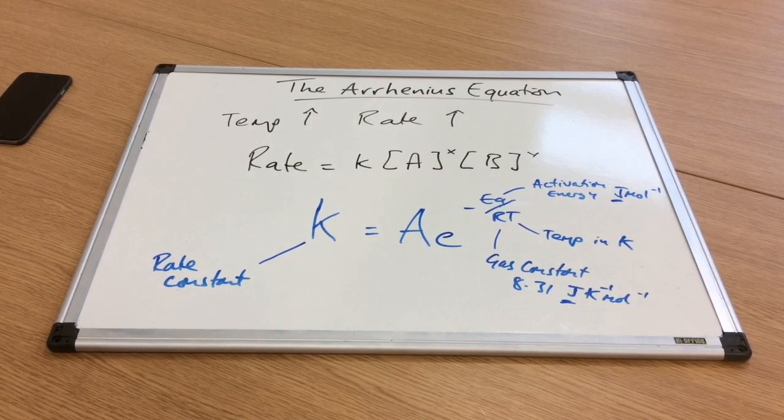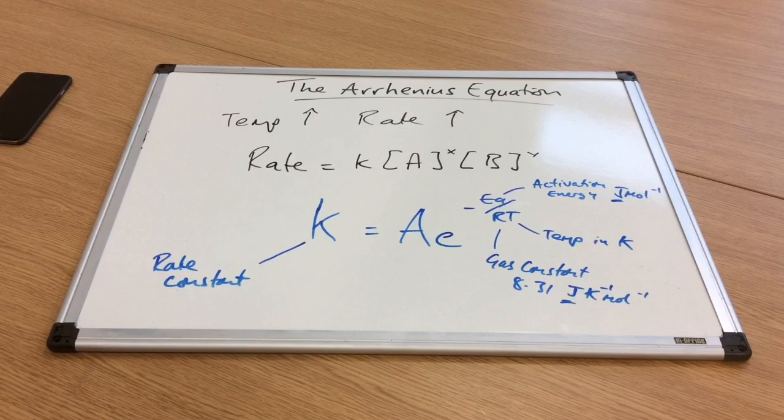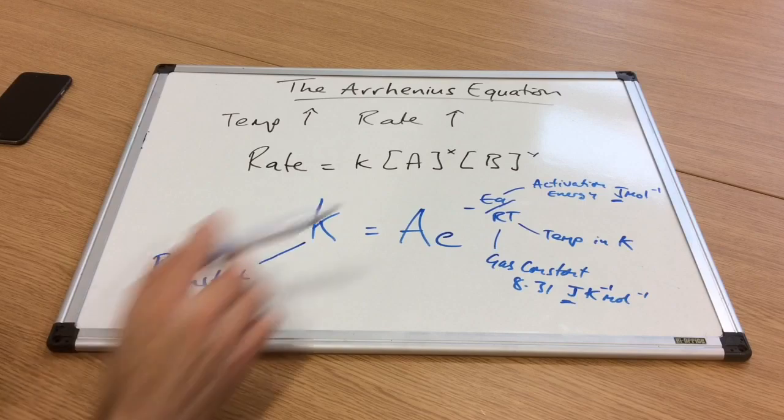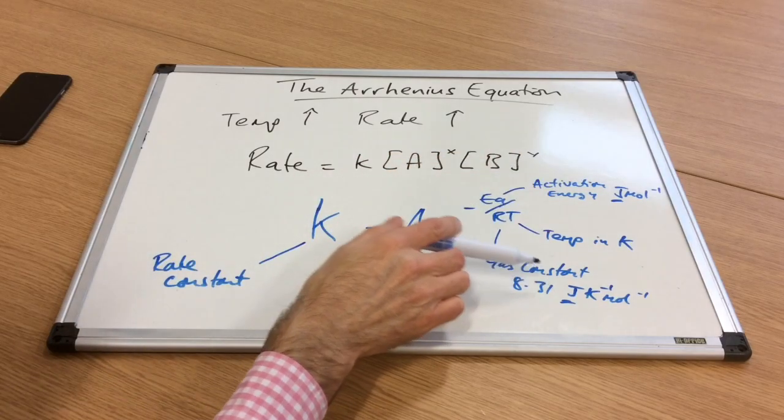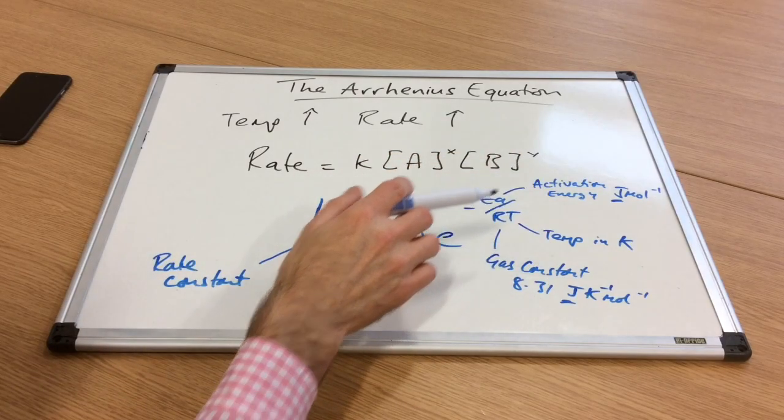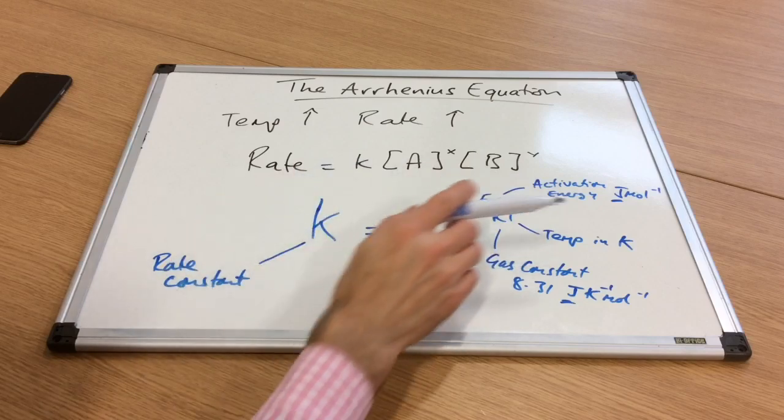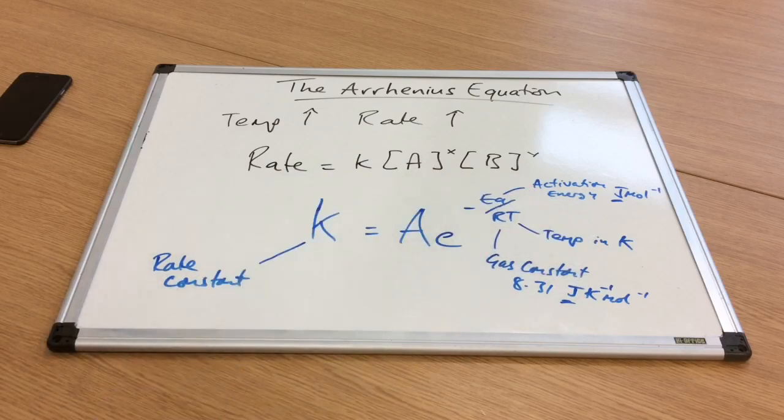R is the gas constant—8.31 joules per Kelvin per mole, which is on the data sheet. You can see why the units are important: we've got to have commonality in the units. We can't have kilojoules and joules. We've got Kelvin for temperature, so no Celsius at all.